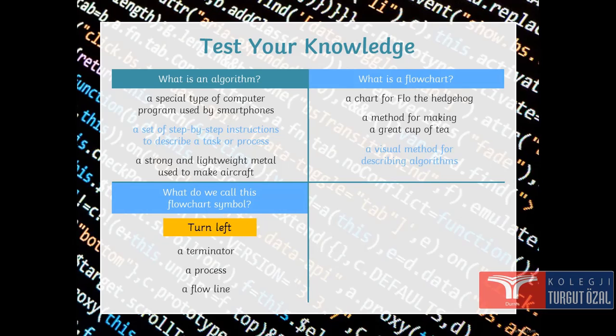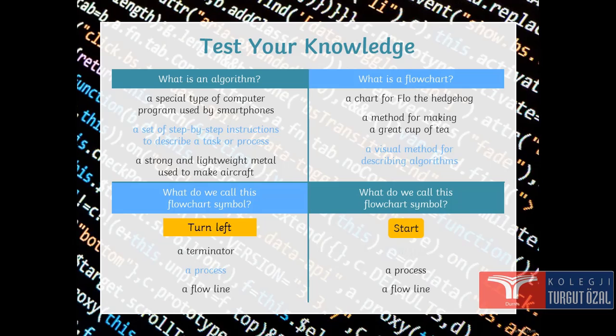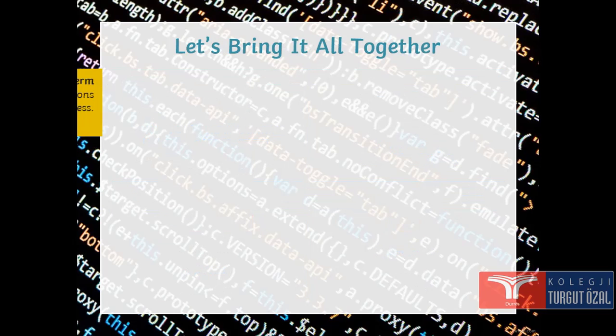What do we call this flow chart symbol? Turn left. We call this terminator, a process or a flow line. We call this a process. What do we call this flow chart symbol? Start, process or a flow line terminator.